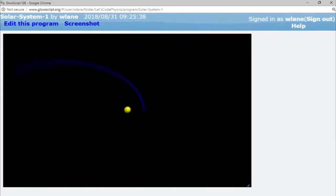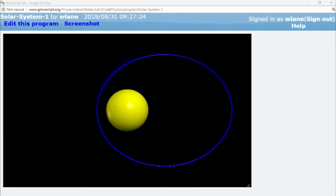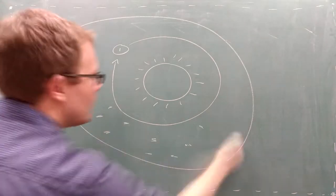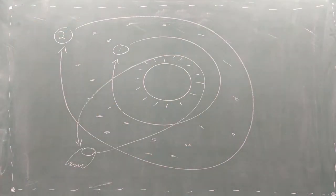Now that we have our gravitational force function working, we can start to build a planetary system. A planetary system is any number of planets, asteroids, comets, etc. that orbit a common star.